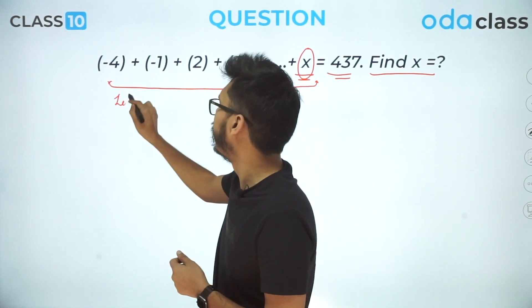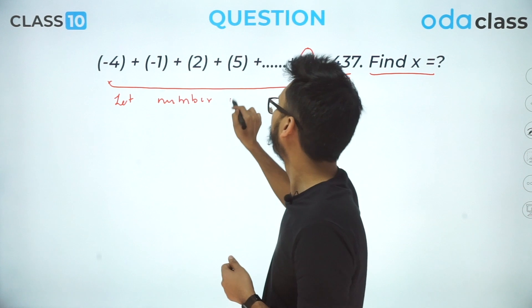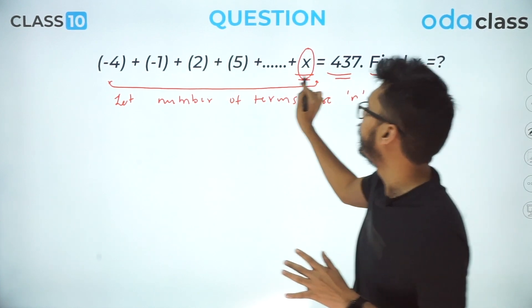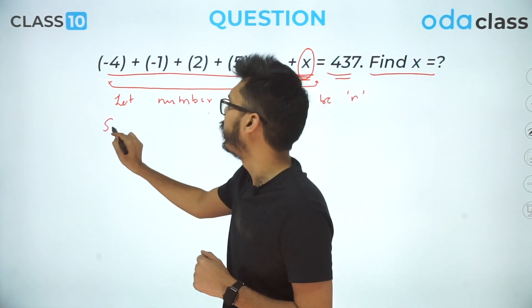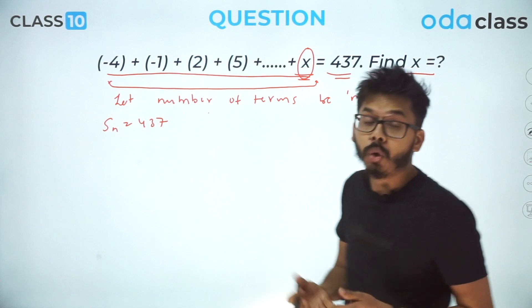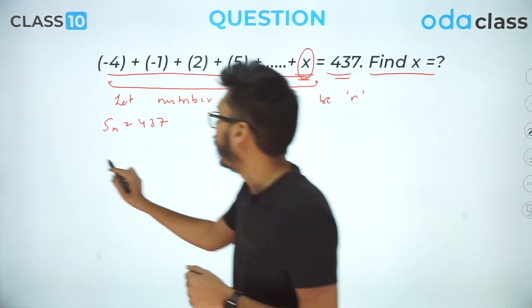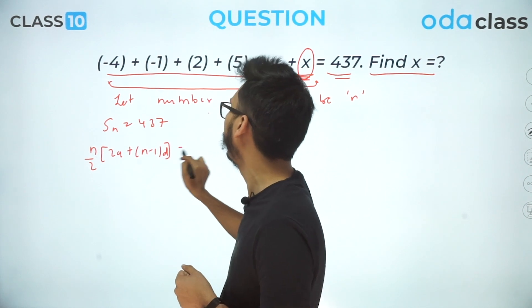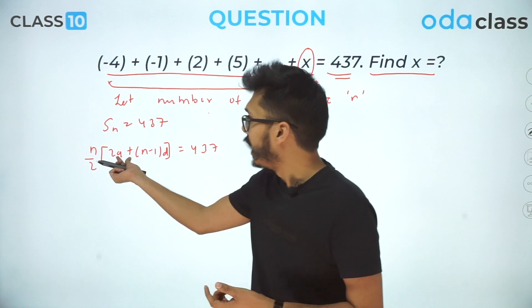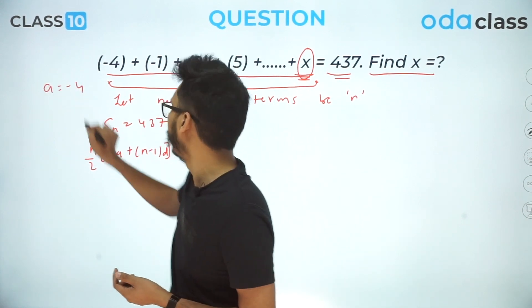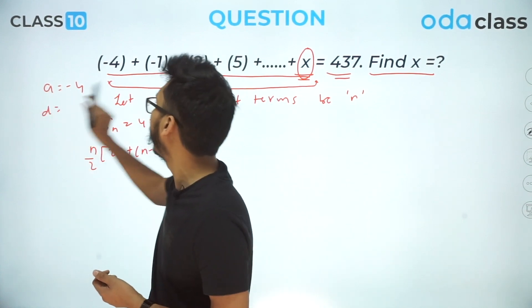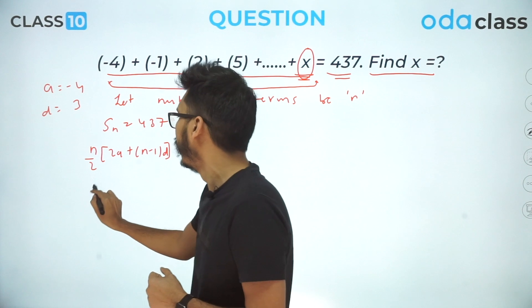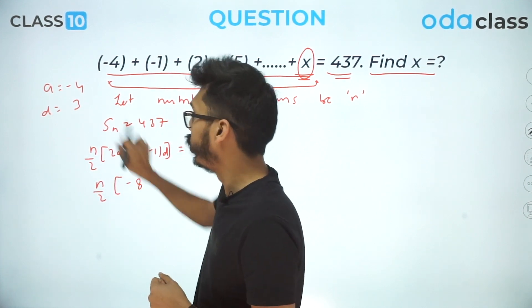We assume the number of terms is n. Since the total sum is 437, we have Sn = 437. Using the formula Sn = n/2 × [2a + (n−1)d], we identify a = −4 (first term) and d = 3 (common difference, since −1 − (−4) = 3). Plugging in: n/2 × [−8 + (n−1)×3] = 437.